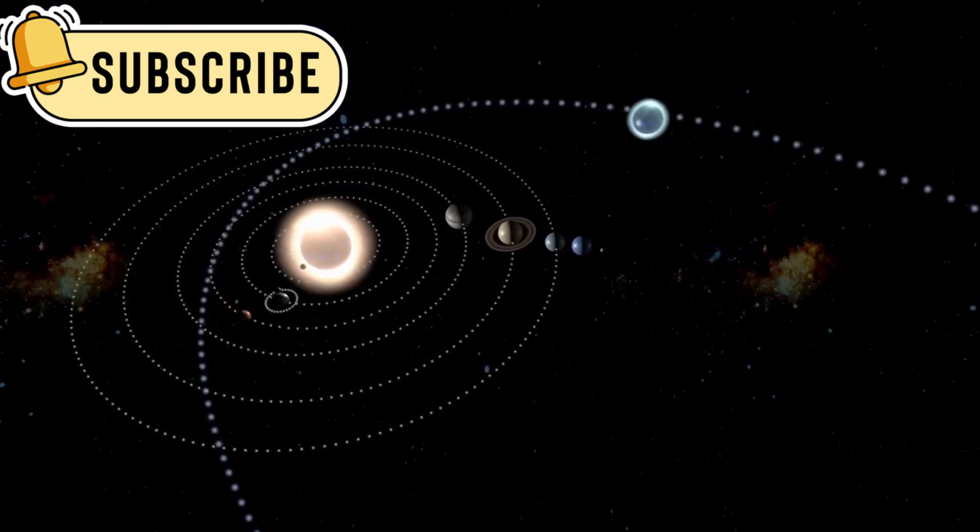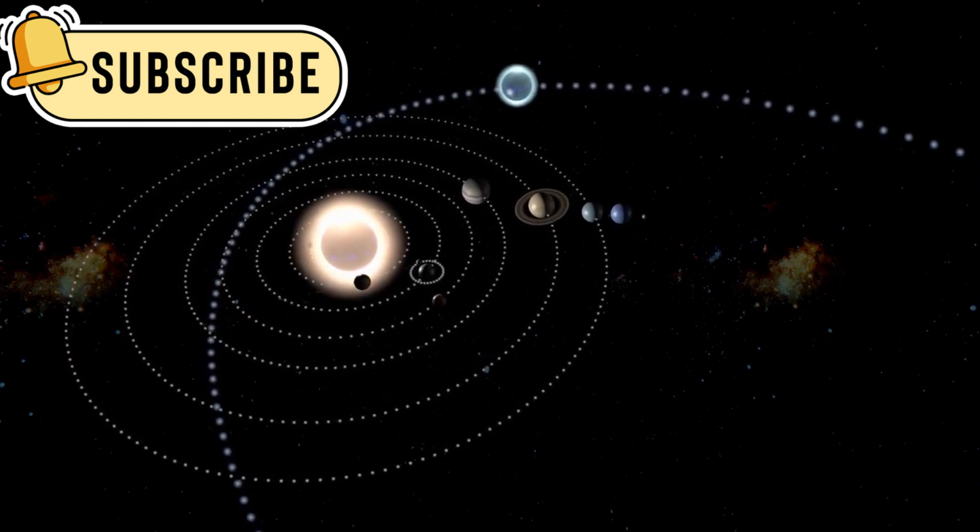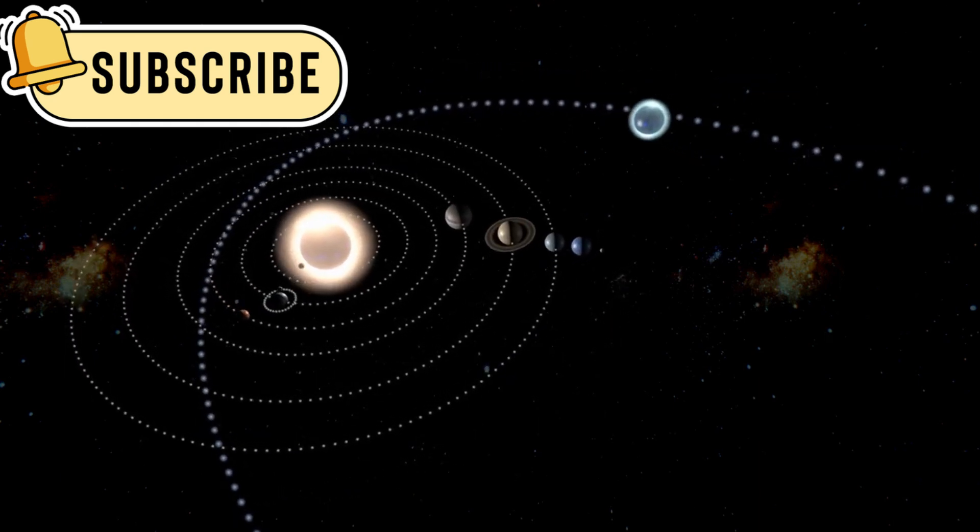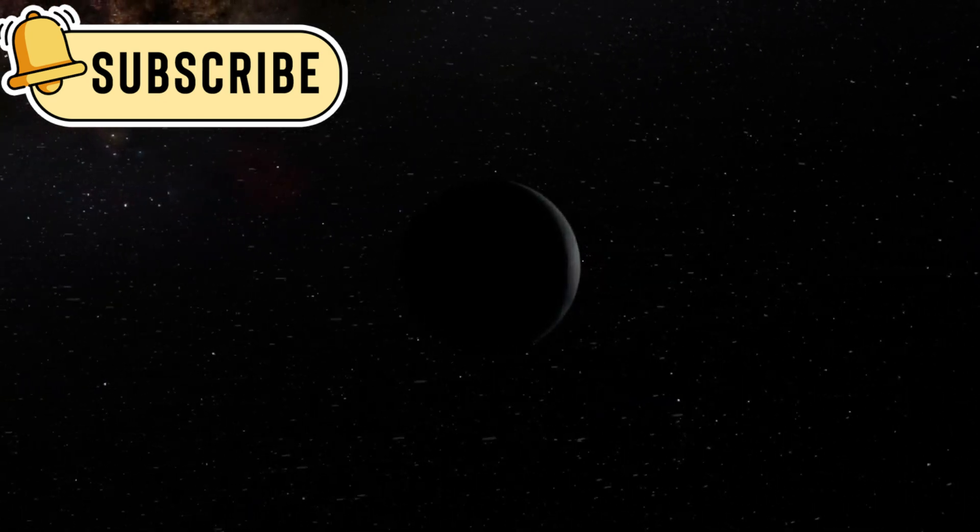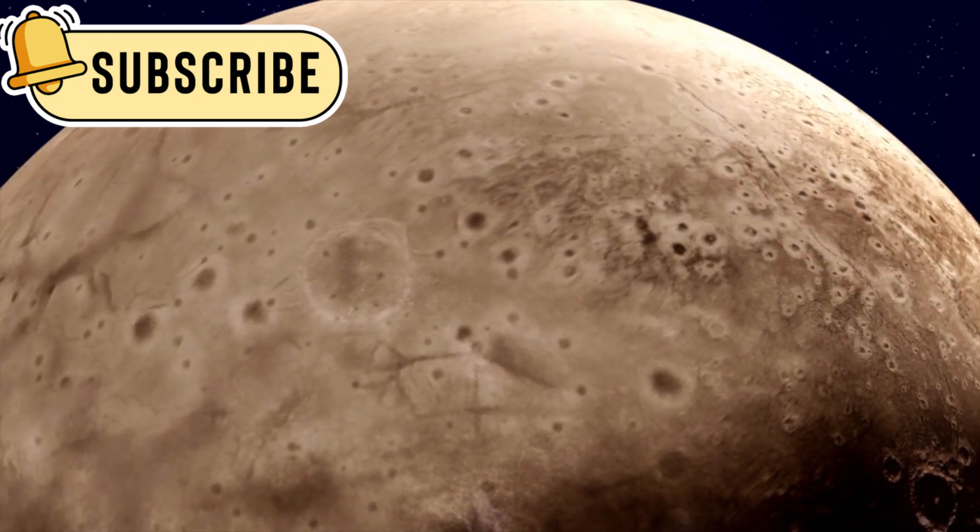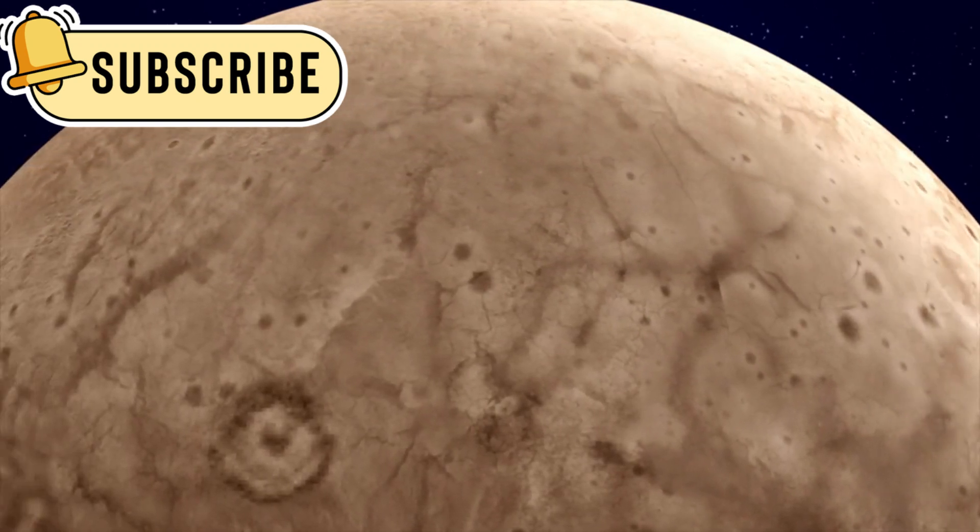The concept of orbital chaos, which refers to how small changes in a planet's position or speed can drastically alter its orbit, is particularly visible in Pluto's case. Even minor shifts could have dramatic effects on its orbit over time. While simulations help researchers study these movements, the chaotic nature of Pluto's orbit makes precise predictions challenging.